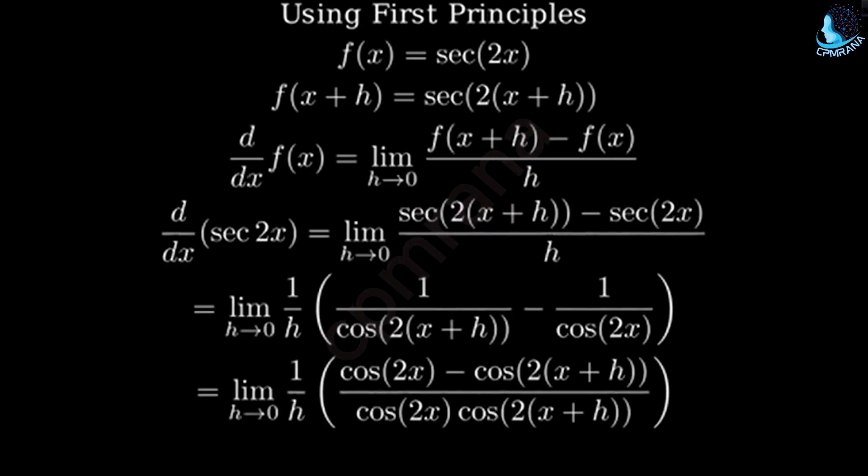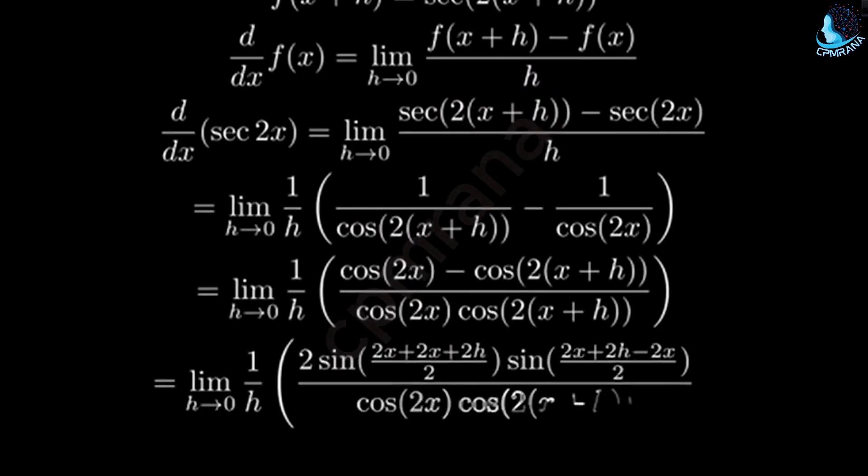Now, we can use the cosine difference formula. The difference of cosines equals negative 2 times sine of their sum over 2 times sine of their difference over 2.